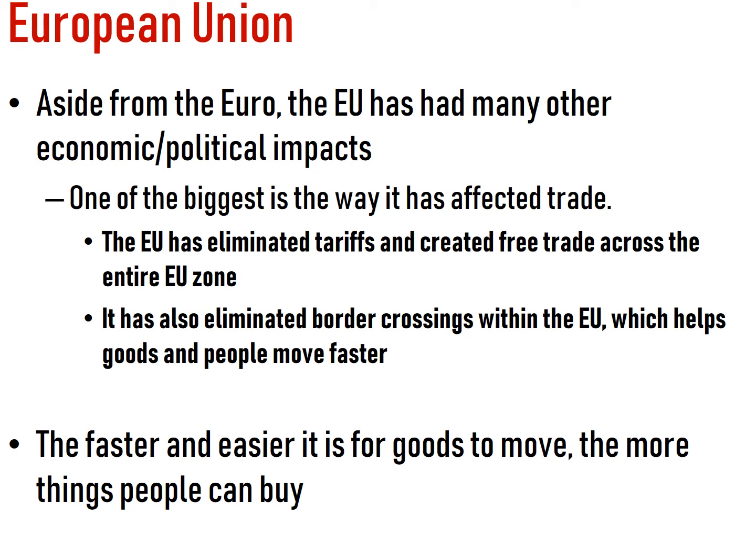Aside from the euro, the EU has had three major impacts you need to know. First, it created a single currency for all member countries to use. Second, the EU eliminated tariffs — taxes on trade — so there are no taxes on trade between EU countries, which stimulates the economy of both countries. Third, it eliminated border crossings within the EU — no checkpoints, no passport checks. If you're traveling from one EU country to another, you can travel as if going from state to state in the US, allowing goods and people to move faster and more efficiently.